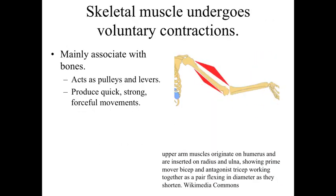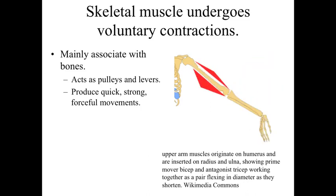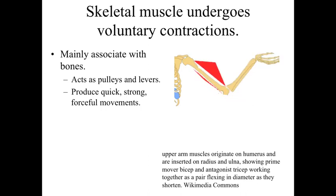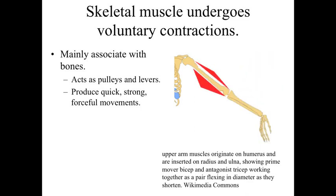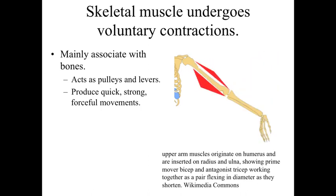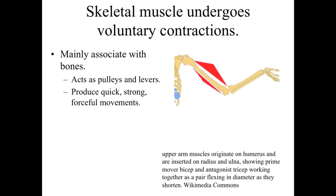When we talk about skeletal muscle, we've talked about how we control muscle contraction. Skeletal muscle undergoes voluntary contraction, interacting with bones to act as a series of pulleys or levers to allow for quick, forceful movements within the body. Your nervous system triggers motor neurons that send the message through a peripheral nerve, through that synapse, and cause muscle contraction to occur — under your voluntary control.